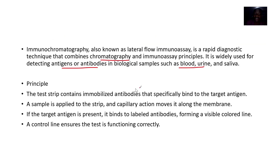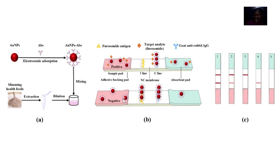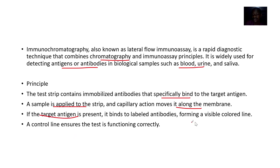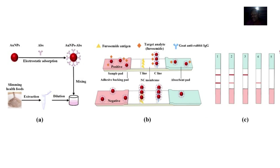The principle: the test strip contains immobilized antibodies — antibodies are fixed in one place — and they specifically bind to a target antigen. A sample is applied to the strip, and capillary action moves it along the membrane. If the target antigen is present, it binds to the antibodies, forming a visible colored line.